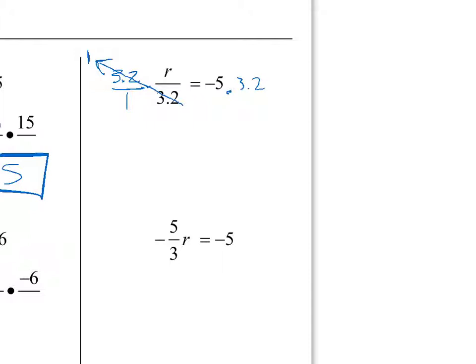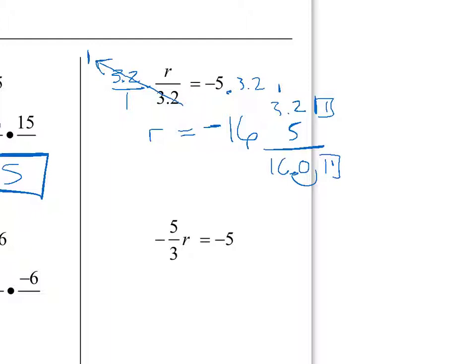So I have 3.2 over 1, or just 3.2 — either way is fine. On the left-hand side, the 3.2 over 3.2 multiplication ends up as 1, giving us 1 times R, which is just R. On the right-hand side, R equals negative 5 times 3.2. First: bad date, so the answer is negative. Then 5 times 3.2 — one decimal place, so I need one decimal place in my answer — comes out to exactly 16. So R equals negative 16.